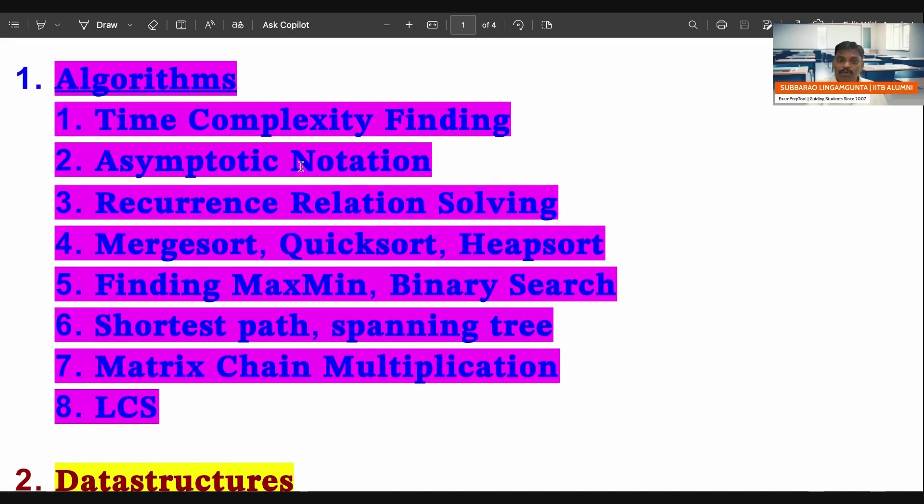Next one is asymptotic notation, recurrence relation solving. Merge sort, quick sort, heap sort - every year one question may come from merge sort, quick sort, heap sort combinedly, or there may be chance of two questions also. Finding maximum minimum binary search, Dijkstra's algorithm for single source shortest path, spanning trees - Prim's algorithm, Kruskal algorithm. Mostly you will get one question from this. Either shortest path will come or spanning tree will come or both may come. In dynamic programming, matrix chain multiplication and LCS. Many times they asked, they may ask again also.